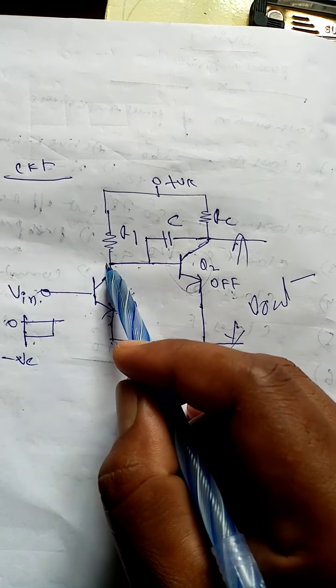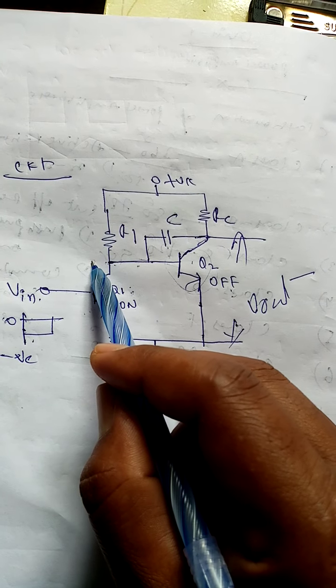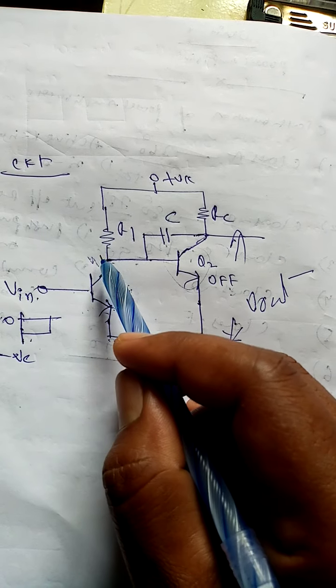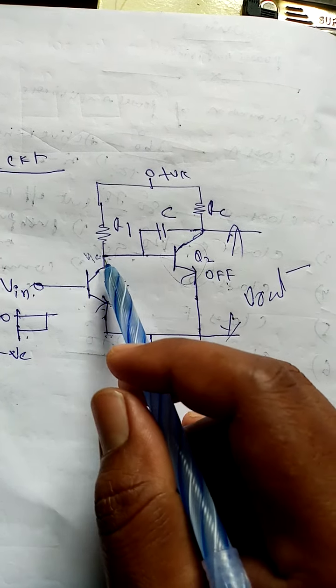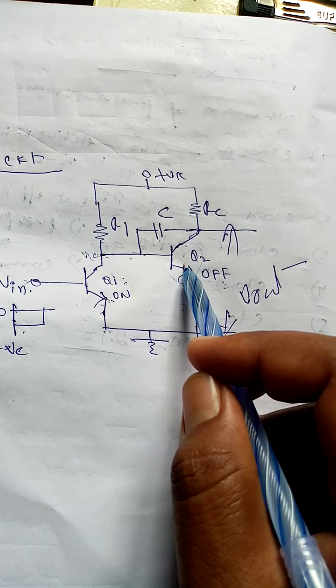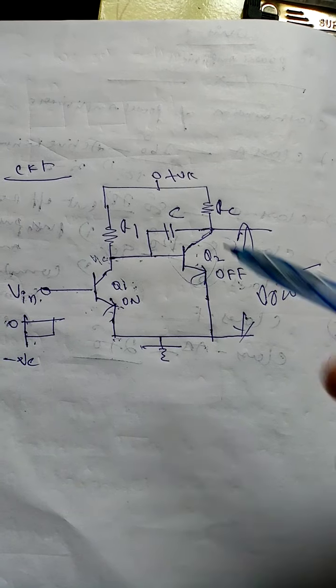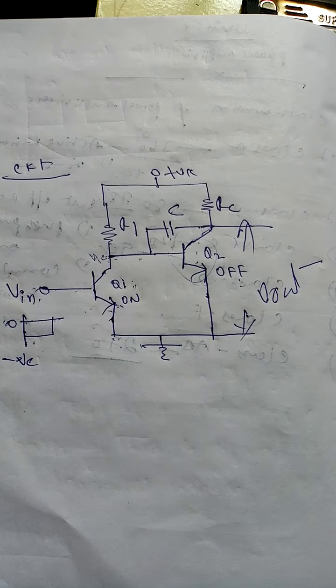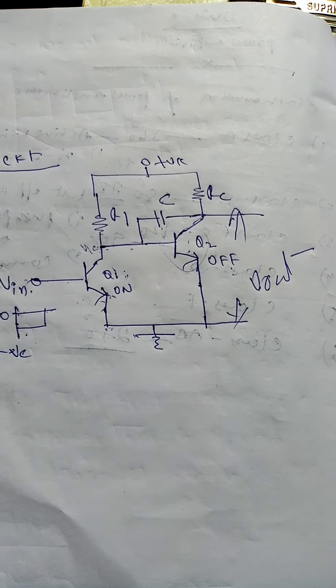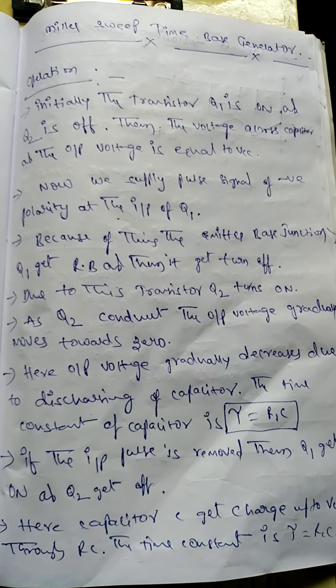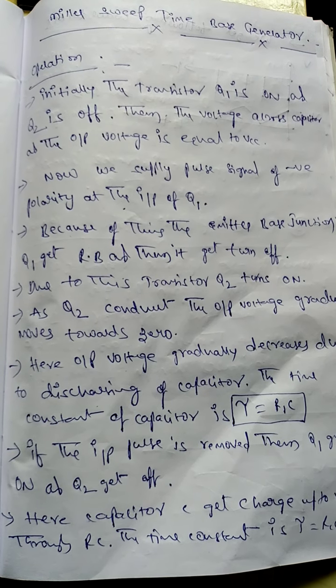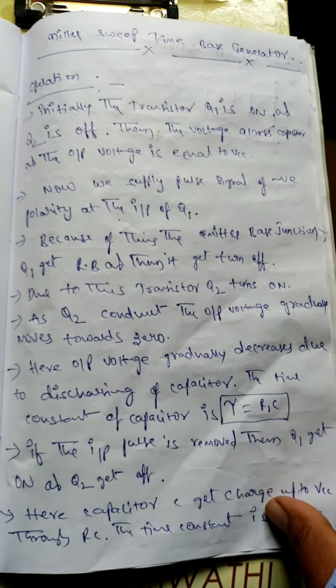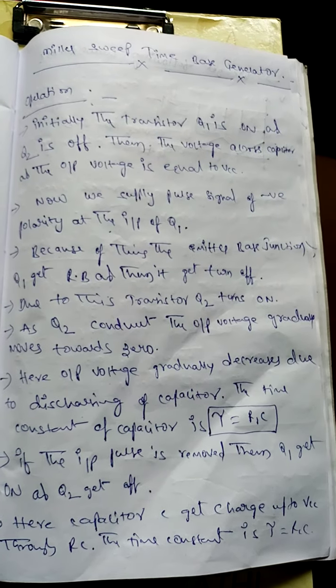The voltage VCE here — VC1 voltage equals VCC — is applied to Q2 transistor, which becomes active and causes the capacitor to discharge. This is the operation of the Miller sweep circuit. This circuit diagram shows the waveforms of the Miller sweep circuit.